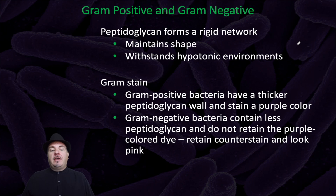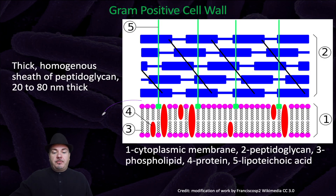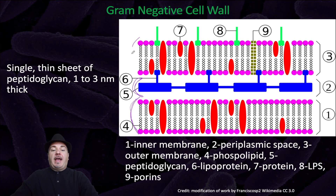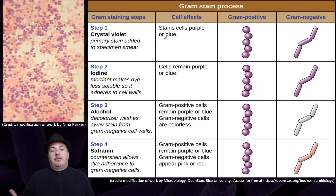A way to differentiate gram-positive and gram-negative bacteria is through gram-staining. Gram-positive bacteria have a thicker peptidoglycan wall and they'll stain a purple color, whereas gram-negative bacteria contain less peptidoglycan and do not retain the purple dye — instead they retain a counterstain that looks pink. In figure form, gram-positive cells have a very thick peptidoglycan layer, 20 to 80 nanometers thick. In contrast, in gram-negative, that peptidoglycan layer is only 1 to 3 nanometers thick, with an outer membrane outside of the peptidoglycan layer not found in gram-positive bacteria.